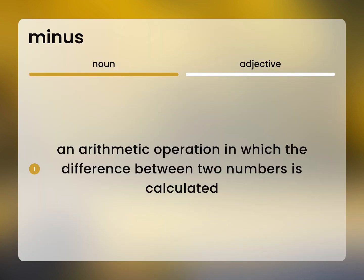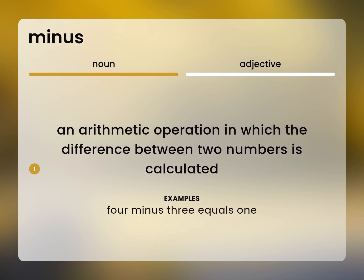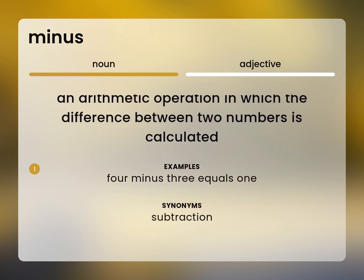An arithmetic operation in which the difference between two numbers is calculated. 4 minus 3 equals 1. Subtraction.